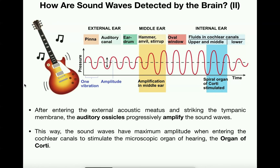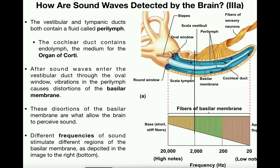That's going to conclude this video. In the next video we'll pick up at what happens when those vibrations move through the oval window. Those vibrations will vibrate fluid called perilymph inside the vestibular duct, also called the scala vestibuli. The fluids move through the vestibular duct, turn around, and move through an anti-parallel duct called the tympanic duct or scala tympani, then exit through the round window. We'll cover all that physiology in the next video.